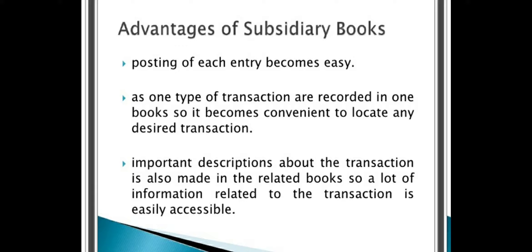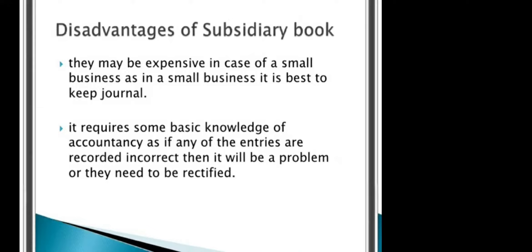The second advantage: as one type of transaction is recorded in one book, it becomes convenient to locate any desired transaction. When the same correlated or related transactions are recorded in a separate book, location and access become very easy. The third advantage: important descriptions about the transaction are also made in the related books, so a lot of information related to the transaction is easily accessible, making it easy to get the required information for management.